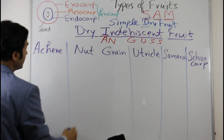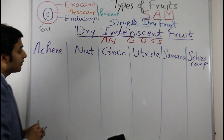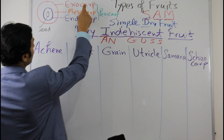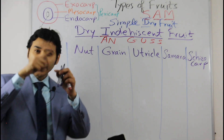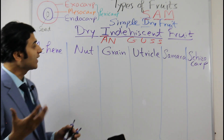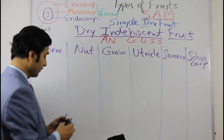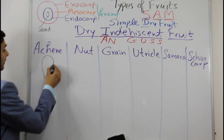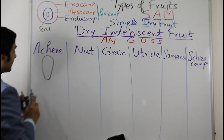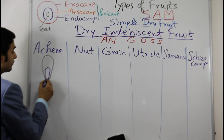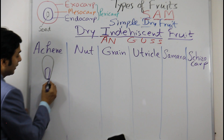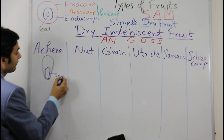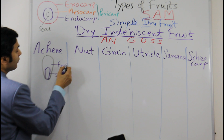Achene is a type of fruit where the pericarp — exocarp, mesocarp, and endocarp together — is dry and will not break by itself. It looks like this: the pericarp surrounds the fruit, and the seed is attached at the base, similar to how an ovule is attached via the funiculus. This is the fruit called achene.